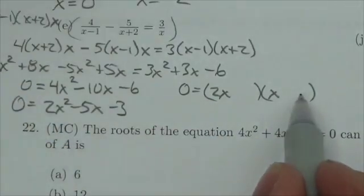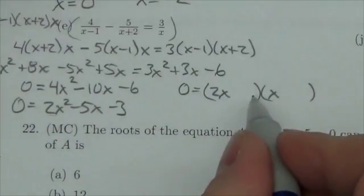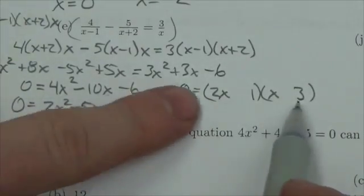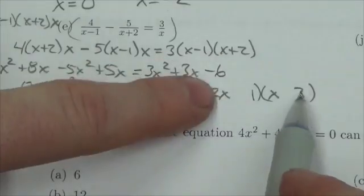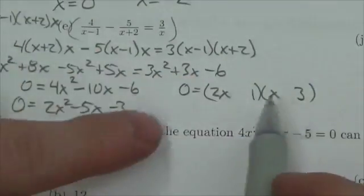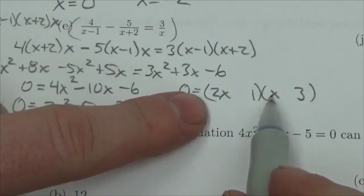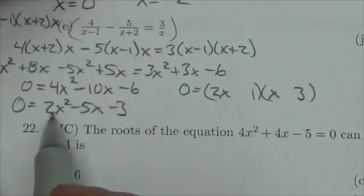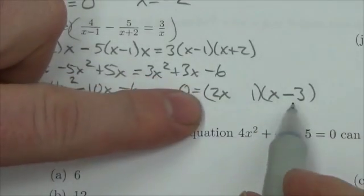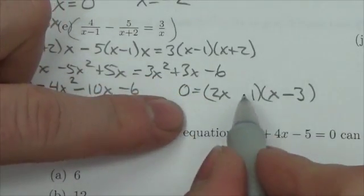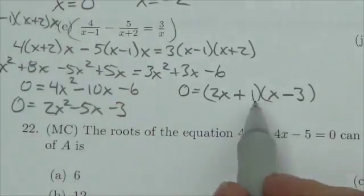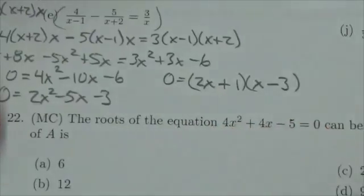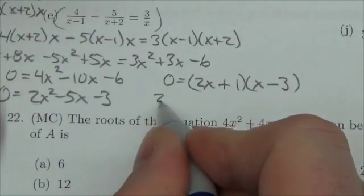So you just test it. If I make this 1 and 3, is it possible for me to get a negative 5 when I multiply the outer terms and the inner terms and add them together? Well, 2 times 3 is 6, 1 times x is 1x, and as long as that becomes negative 6 plus 1, that works. So I get the negative 6 by making the 3 negative, and I get the positive 1 by making that 1 positive here. So those are the factors we're looking for.